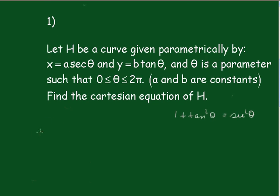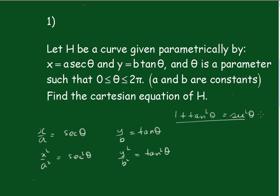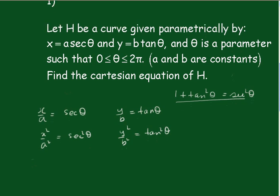So we'll set that up. We'll have x on a equals sec theta and we'll have y on b equals tan theta. So we'll have x squared on a squared equals sec squared theta, and we'll have y squared on b squared equals tan squared theta. So all we need to do is substitute that back into that identity.